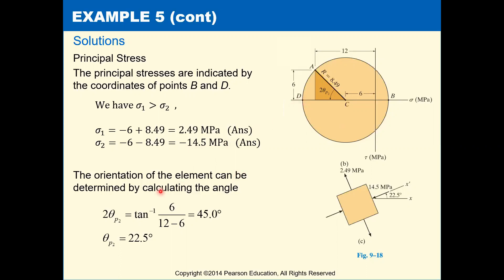And then in order to be able to draw our element, we need to find the angle to at least one of our principal planes. In this case, we'll just find 2 theta P2, because that's our easiest angle to find here. It's just going to be found from inverse tangent of our opposite over adjacent. So that's our same 6 divided by 12 minus 6. We get 45 degrees. It's that angle, which makes sense. It's a 1 1 square root 2 triangle.